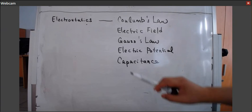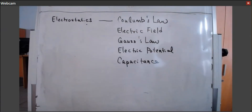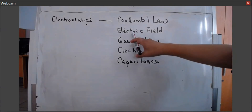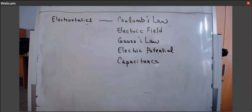We are going to talk about Coulomb's Law. Coulomb's Law is the most fundamental topic to learn under this chapter. Then we are going to step into the concept of the electric field. Afterwards we are going to learn Gauss's Law. Gauss's Law is the main topic of this chapter and we are going to spend more time on it.